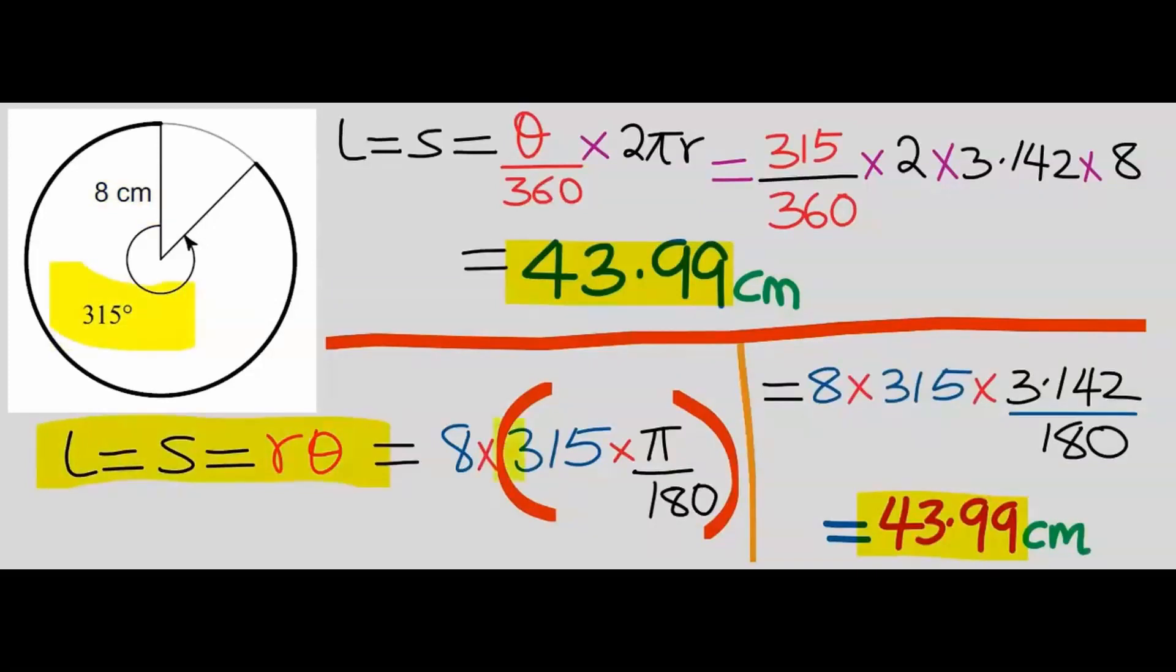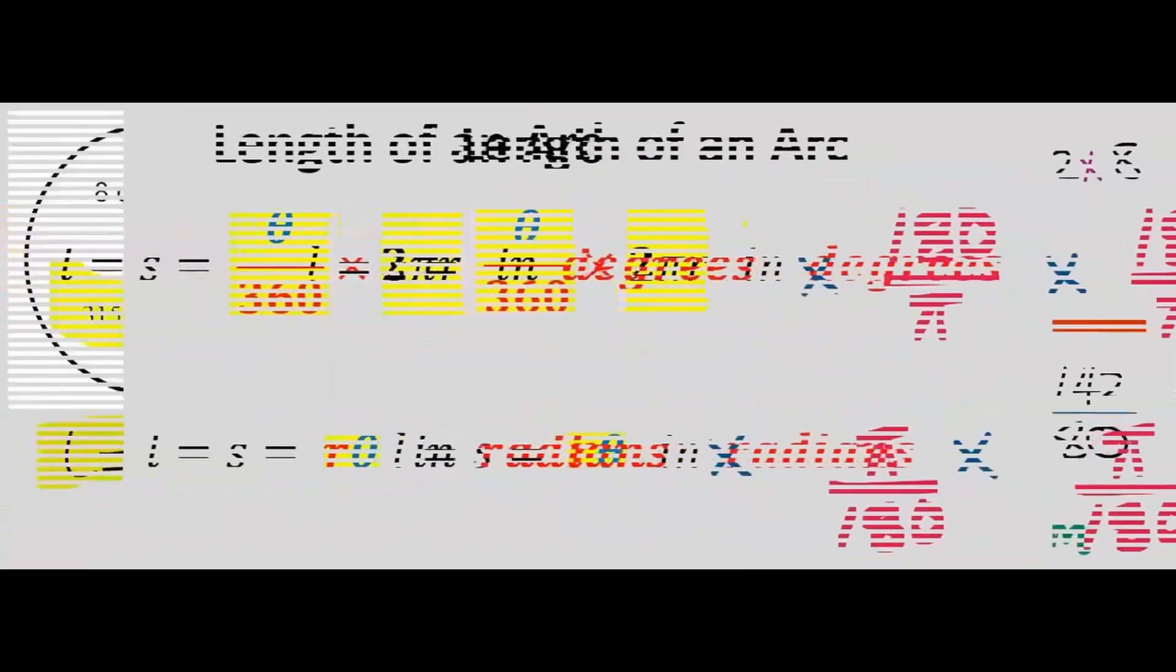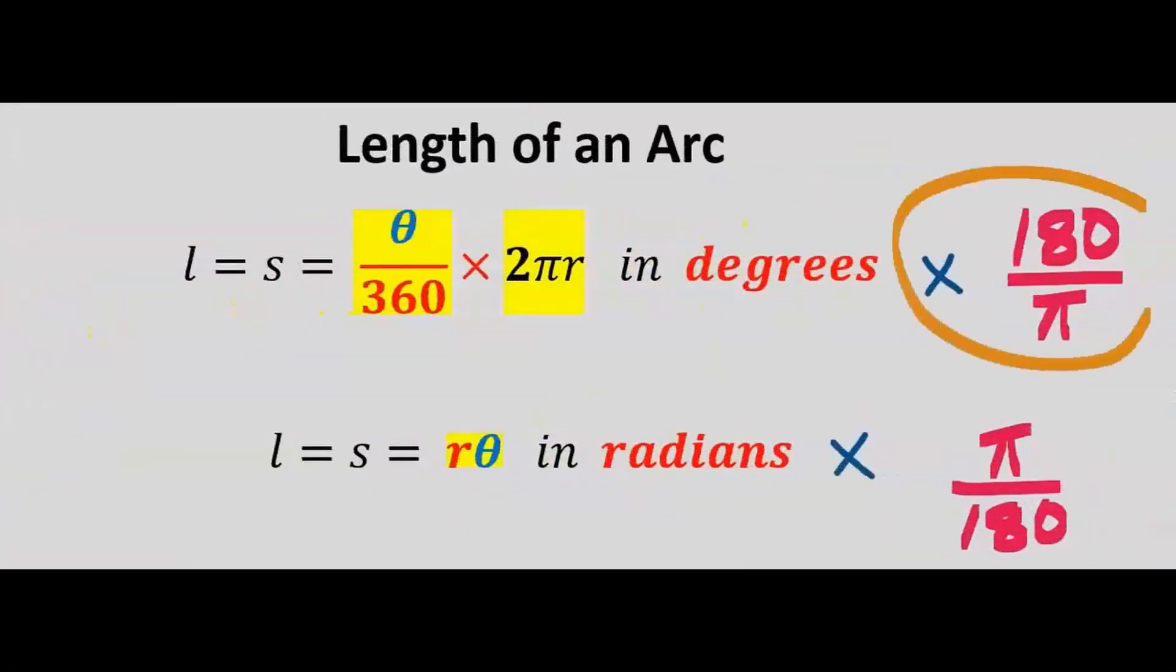To convert degrees to radians, you're going to multiply by pi divided by 180. Likewise, to convert from radians to degrees, you're going to multiply by 180 divided by pi. Always remember this.